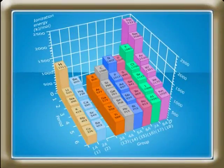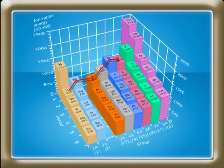In the second period, ionization energy increases from lithium to beryllium and then decreases at boron. From boron to nitrogen, ionization potential increases, and then it decreases at oxygen again. The increase in ionization potential of nitrogen is due to the fact that its outermost orbit is half-filled — 2p3 — which makes the element stable.